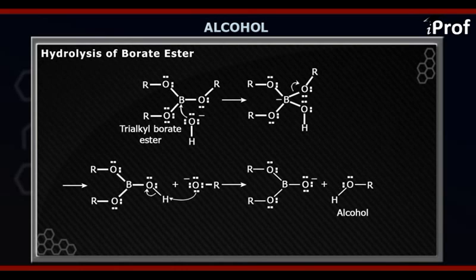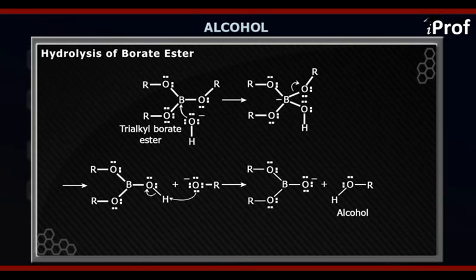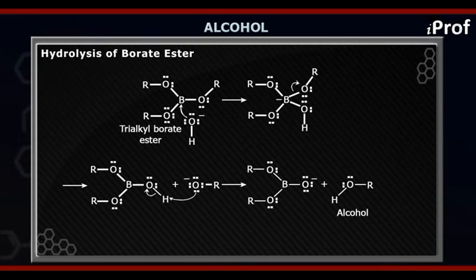After the first hydrolysis step, the product is B(OR)₂O⁻. On this compound, OH⁻ ion will attack again and eliminate another OR group as RO⁻. The product formed is B(OR)(OH)O⁻, and this RO⁻ molecule will again pick up the hydrogen from the OH, forming another molecule of ROH.